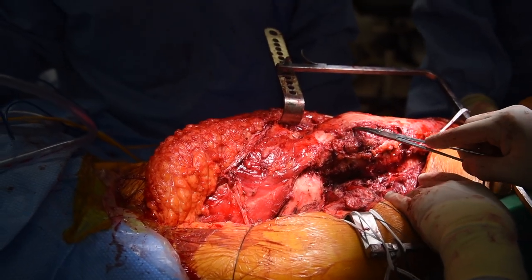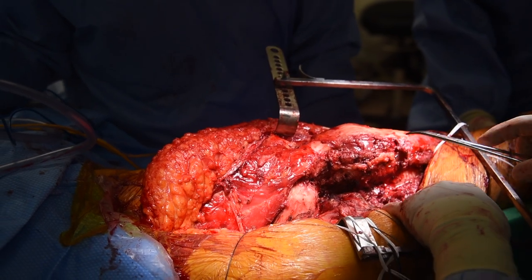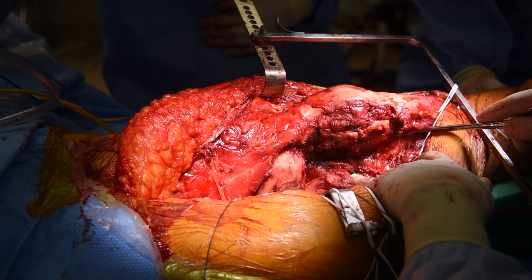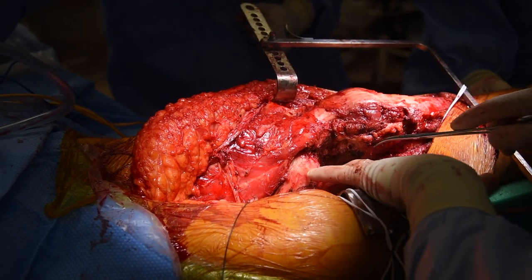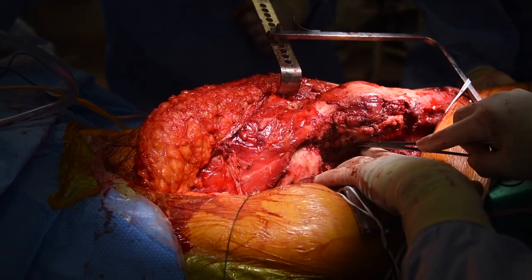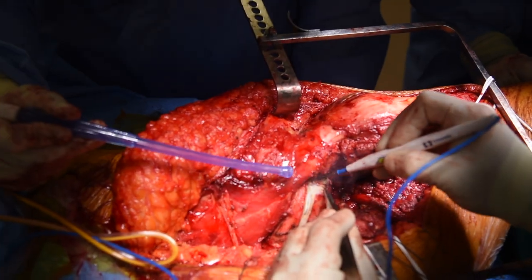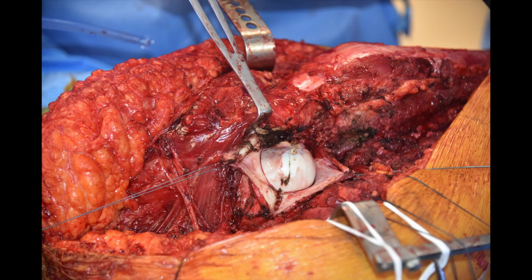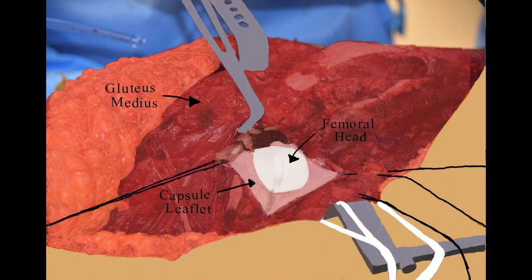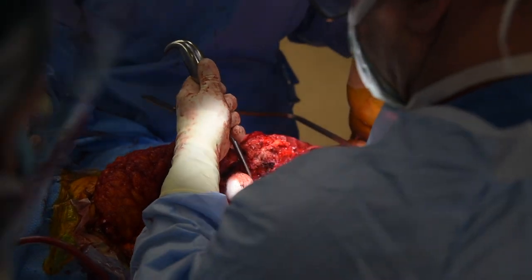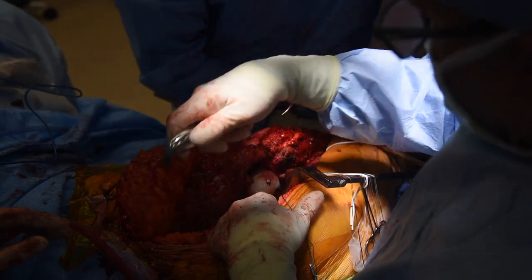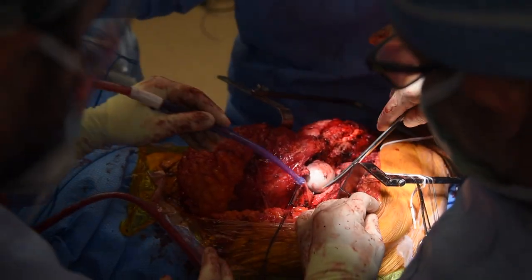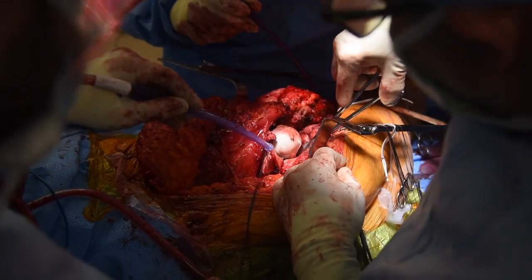This is the vastus lateralis, which we should save some of, though some may need to be removed. Here are the hip adductor muscles; deep to these we will find the profunda vessels and ligate them. Here is the lesser trochanter; we will save the iliopsoas muscle for later repair. Here we have made a T-shaped capsulotomy with the capsule leaflets tagged with suture. We then dislocated the hip and created a digastric osteotomy in the greater trochanter in order to save the insertion of the gluteus medius and minimus and the origin of the vastus lateralis for later repair onto the prosthesis.